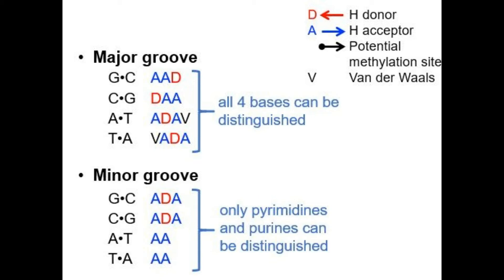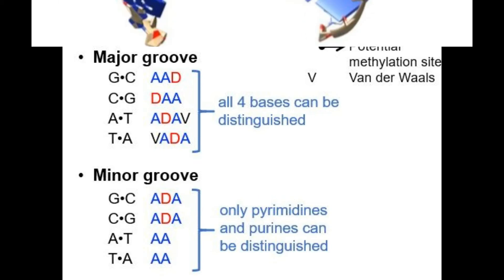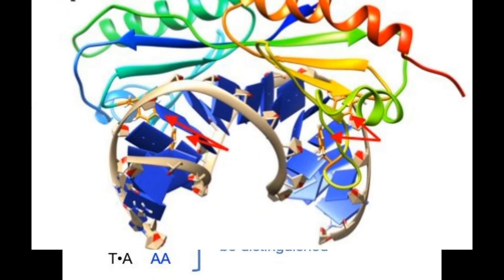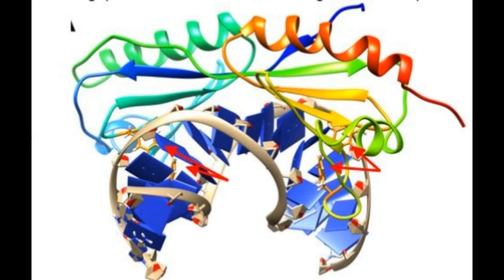A protein like TATA-binding protein (TBP) is going to specifically recognize the TATA box sequence on the DNA, and it binds to the minor groove of the TATA box DNA. So this is a specific binding and not a non-specific one like Sac7D.